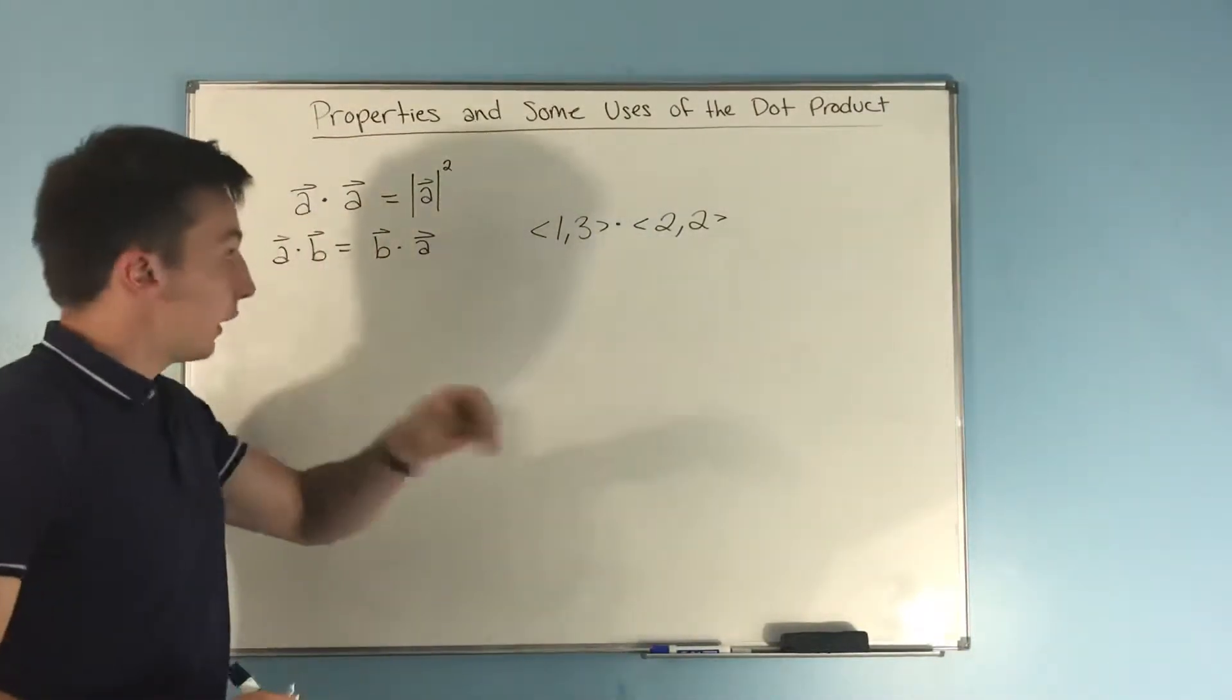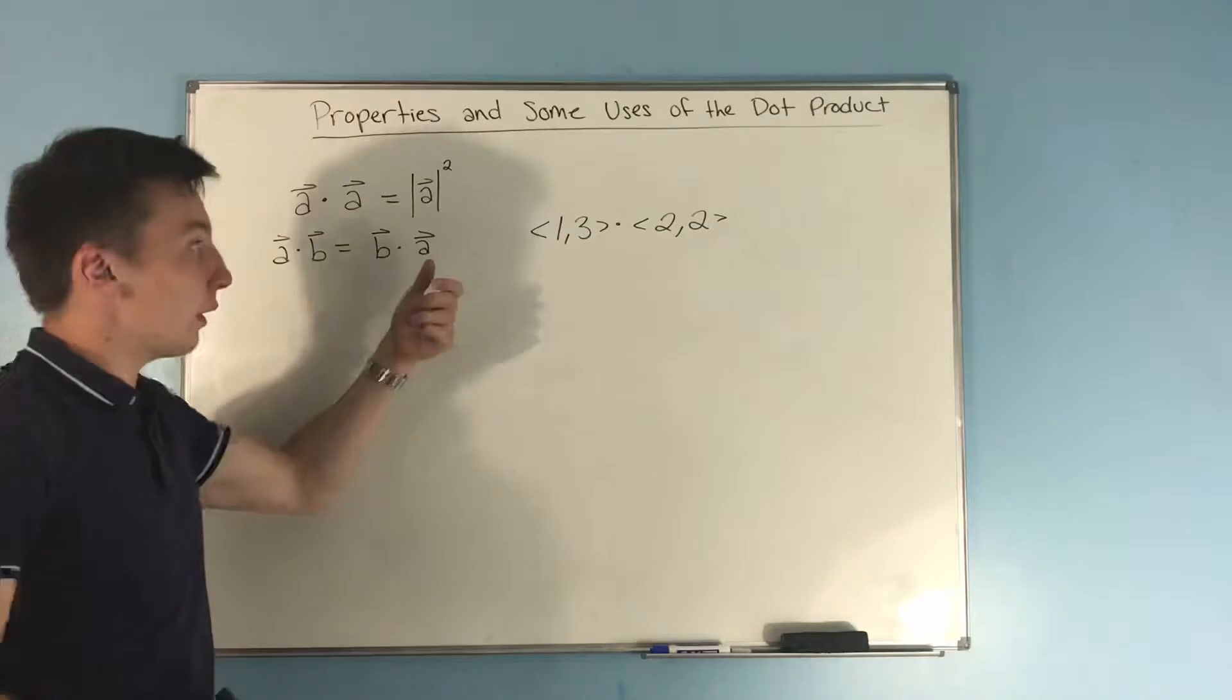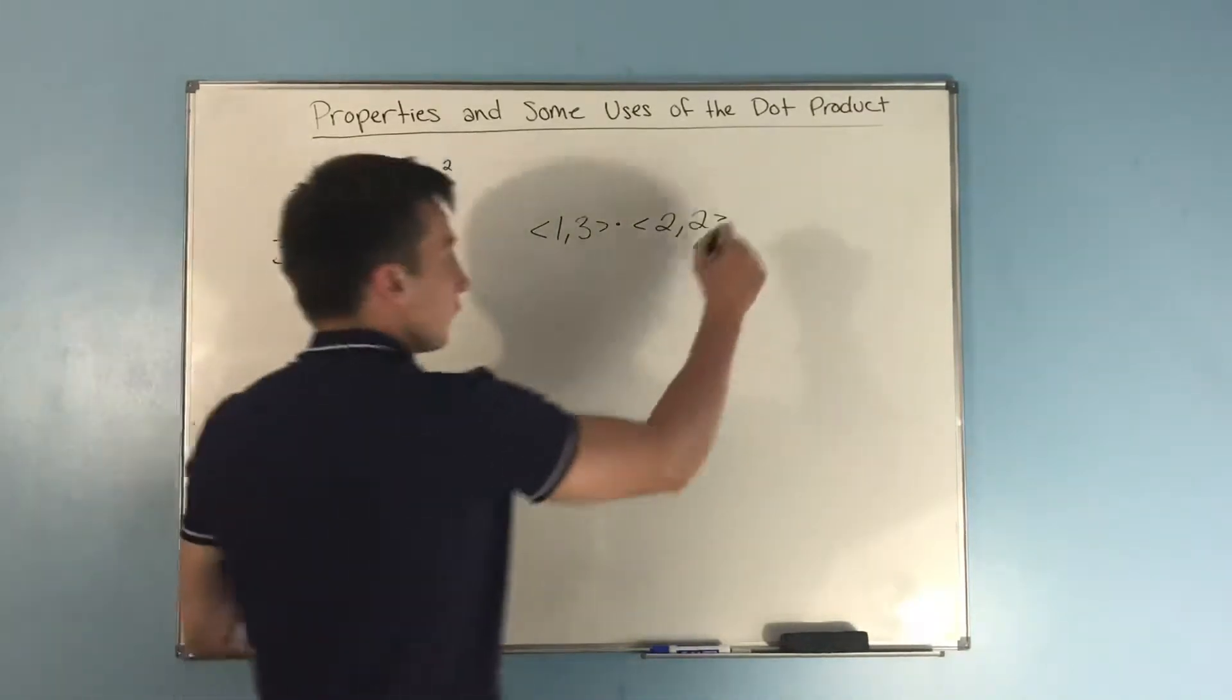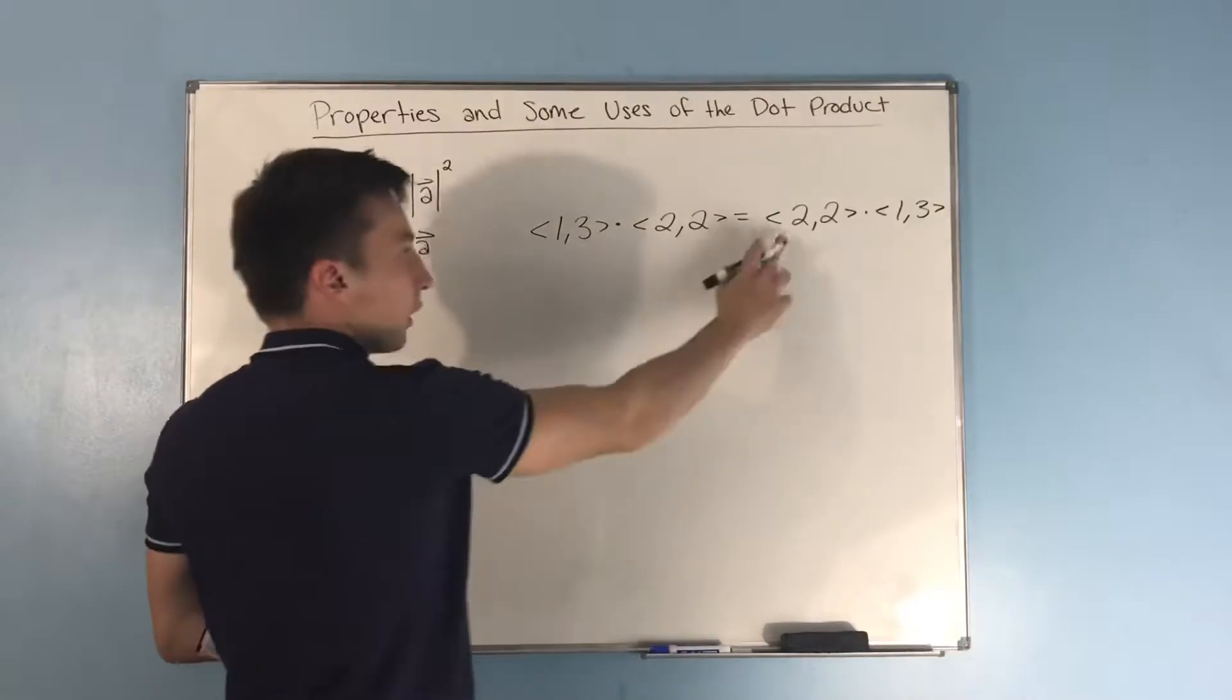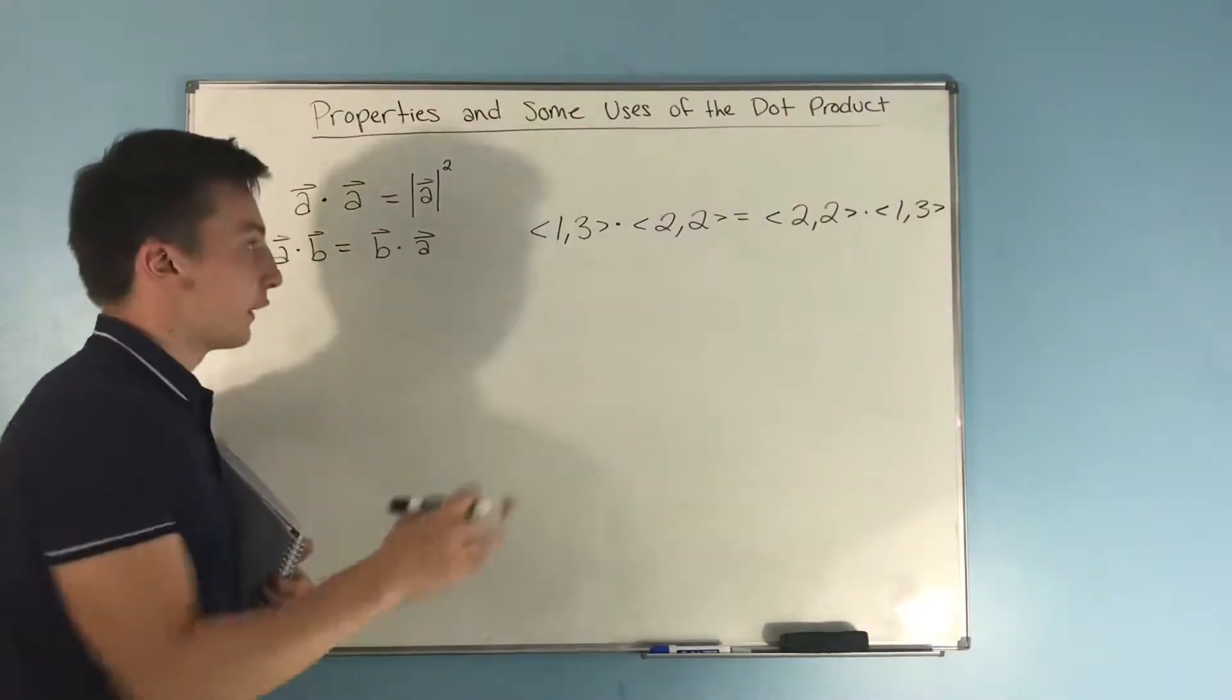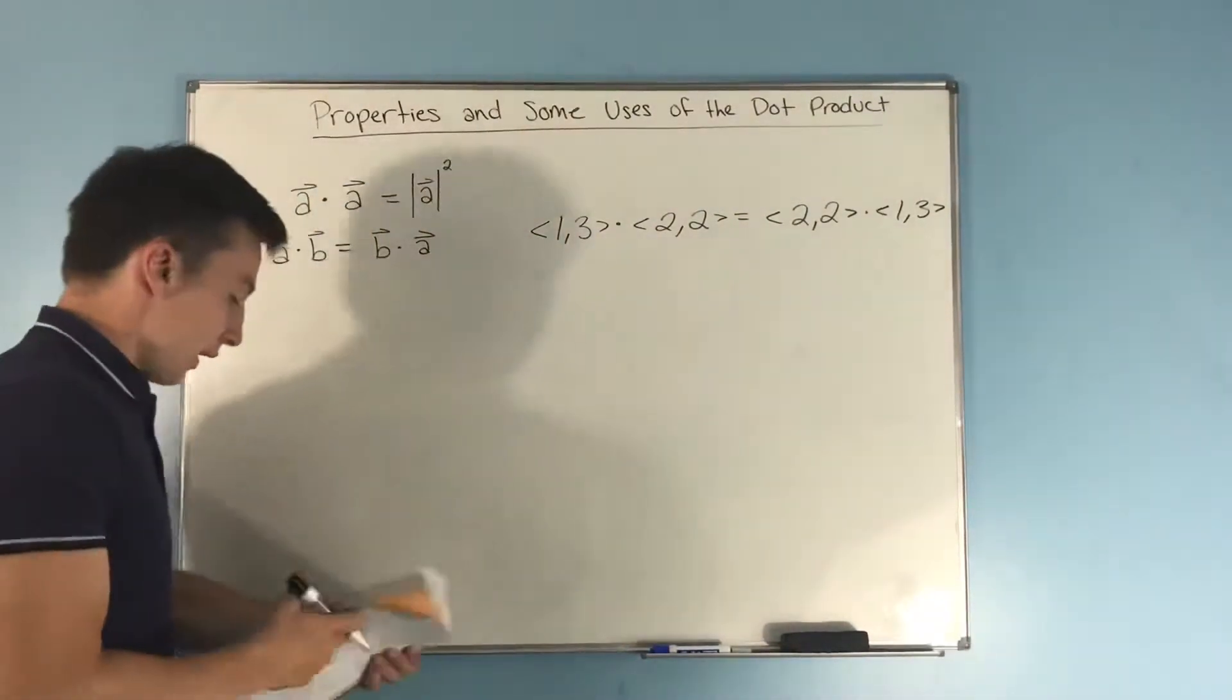All you're really doing here is multiplying your first set of components. It doesn't matter if 2 comes before 1, they're still going to get multiplied together. So if I write it like this, 2 comma 2 dot 1 comma 3, I'm still going to be multiplying this 2 into 1. It doesn't really matter if it's 1 times 2 or if it's 2 times 1, I get the same exact thing. So this holds true.